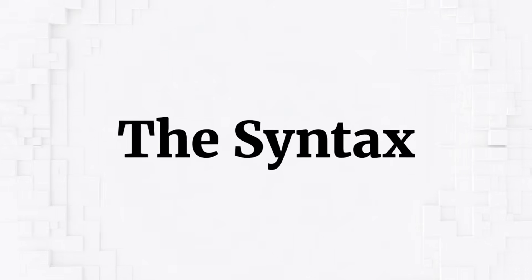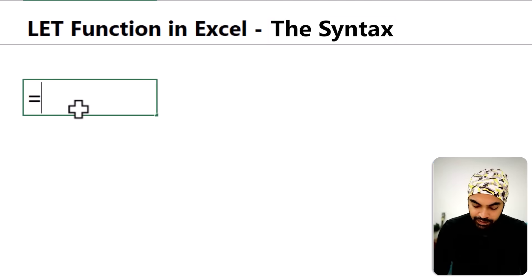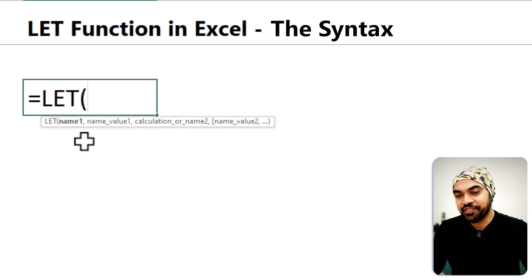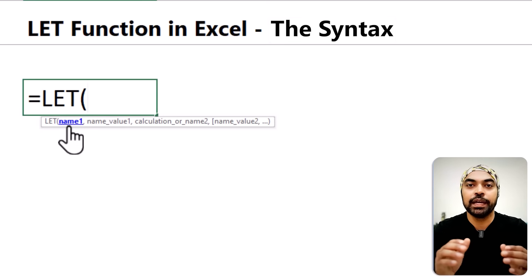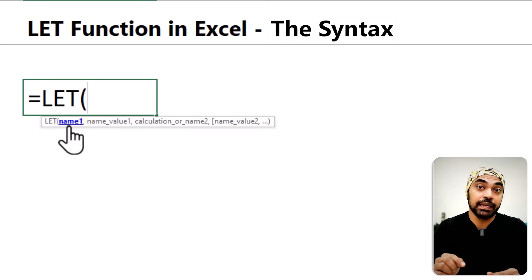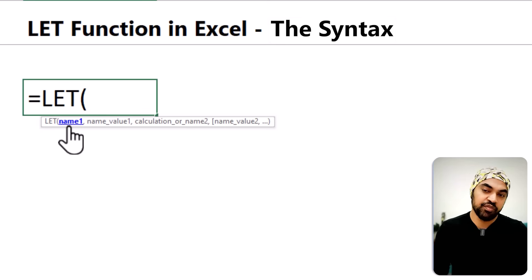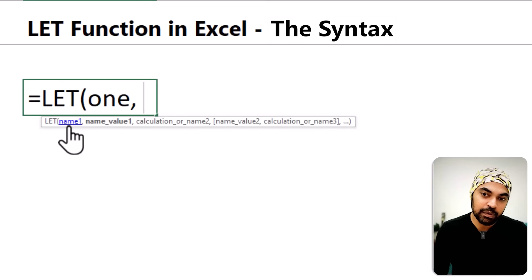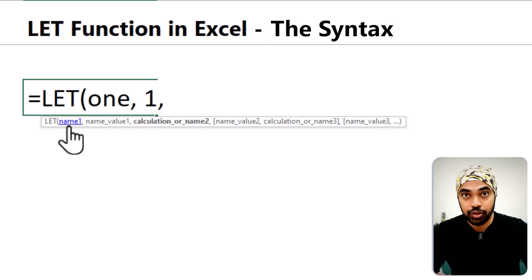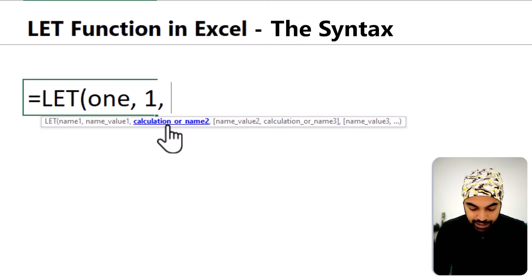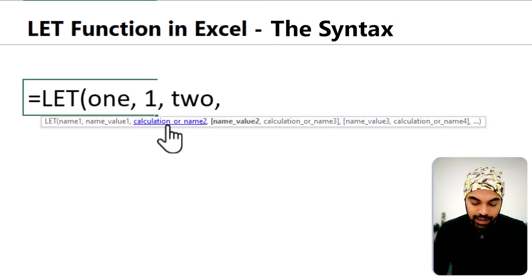Let's first understand the syntax of the LET function, then take a look at a few examples. When we write the LET function in Excel, the first part starts with a name — what would you like to call your variable. The name does not require a quotation mark. So let's say my first variable name is 'one' and I am declaring the value one, and then it asks if you have any more variables to declare. I could declare a second variable as 'two' with the value two.